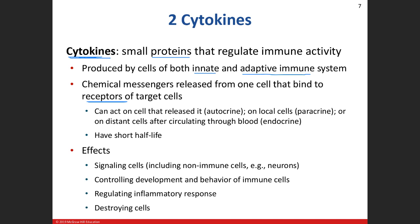When a cell releases a cytokine on itself, we call that autocrine. When it releases it on one of its neighbors — like next-door neighbors — it's called paracrine. And when it releases its chemical messenger into the bloodstream, as we saw in chapter 17, we call that endocrine. So: autocrine on itself, paracrine on a close neighbor, endocrine somewhere in the body via the bloodstream.